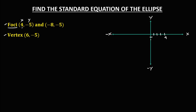So negative 1, negative 2, negative 3, negative 4, negative 5. This is now the point of the first focus at (4, -5).